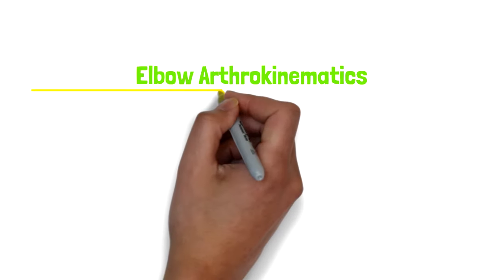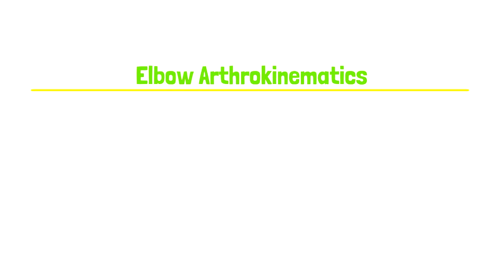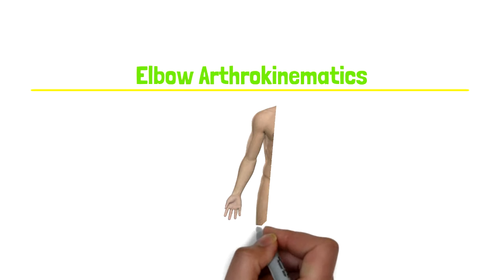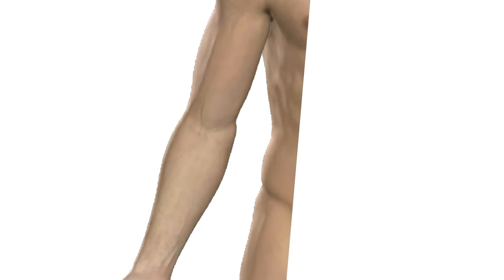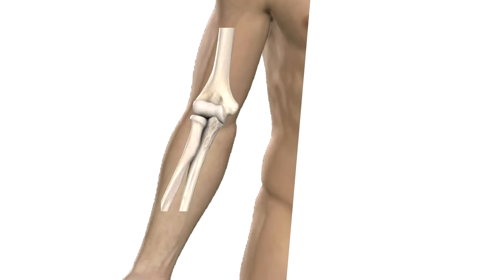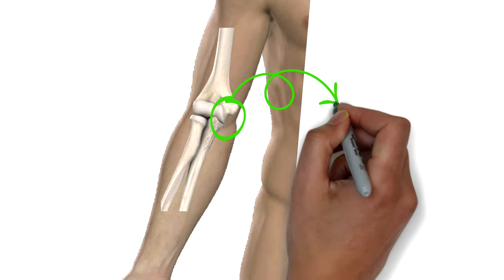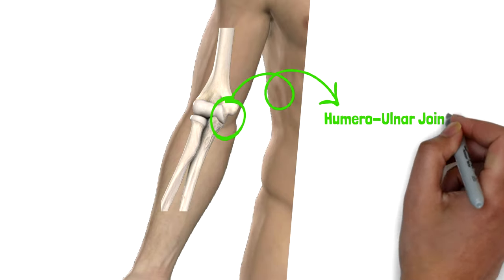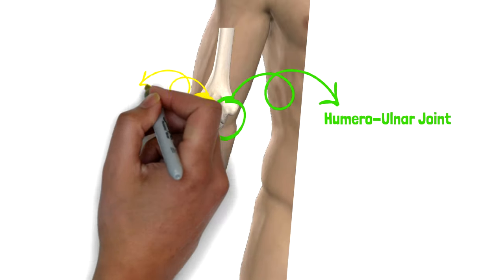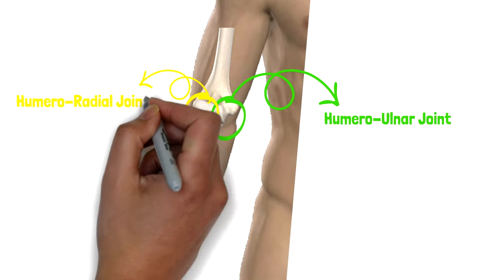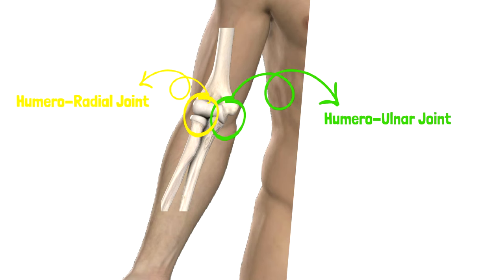Hello and welcome. I'm Dr. K. In this video we will examine the arthrokinematics of the elbow joints. The articulations forming the elbow are the humeral ulnar and humeral radial joints. Let's discuss humeral ulnar articulation first.